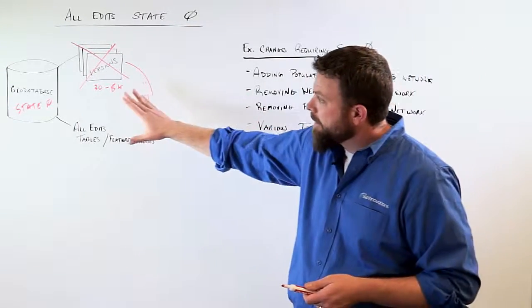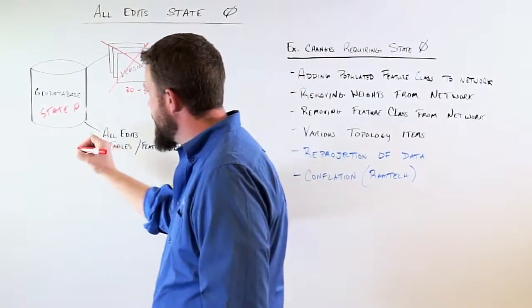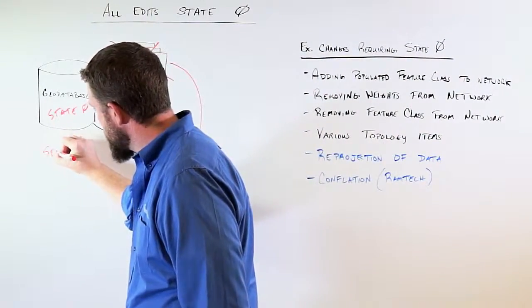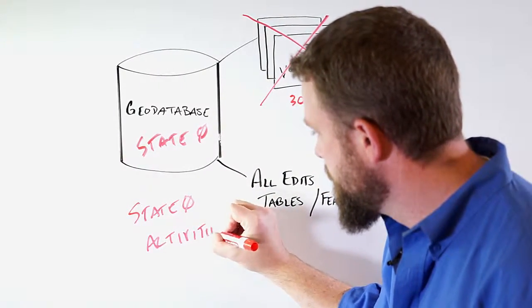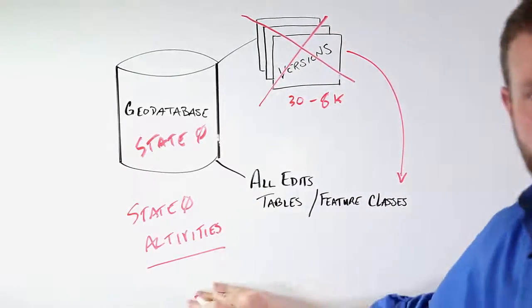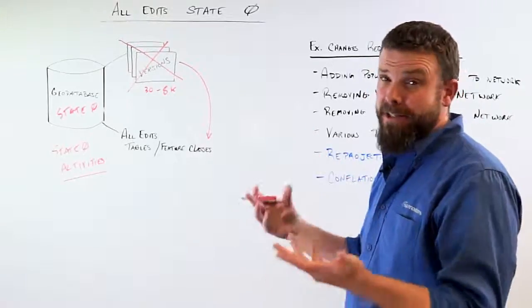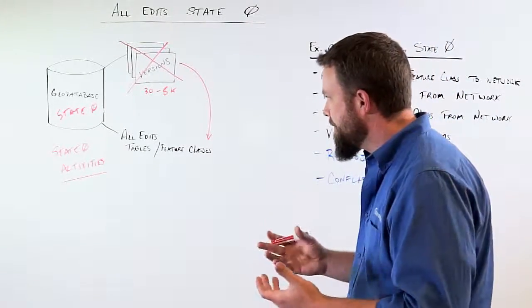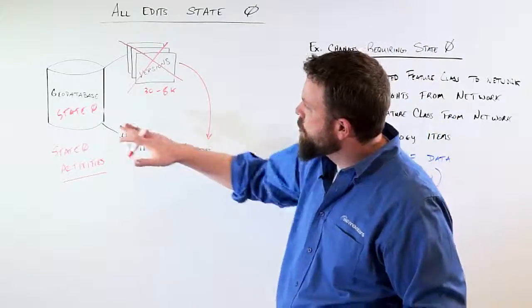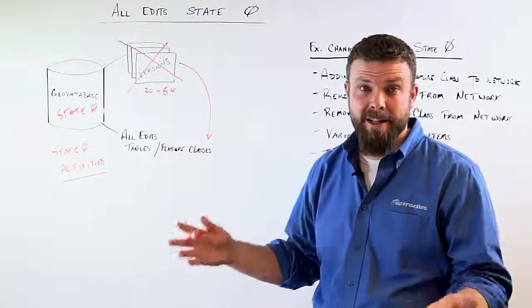So in either case here back on this side, we've gotten to state zero which allows you to do your state zero activities. So whatever those activities are, you would then go about doing them. As we've noted here, you might have other reasons around data migration, model changes, you name it. There's about 50 or 100 other uses that we've found here. So you'd make those changes to your core geodatabase at state zero, dropping the network or recreating the network.